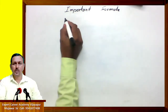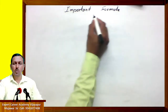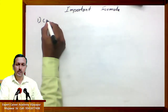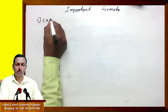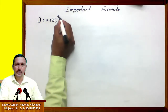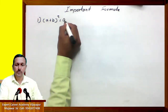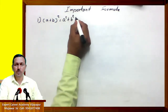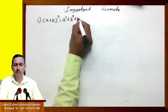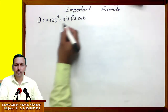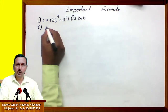Important formula. First one: (a plus b) bracket square equals a square plus b square plus 2ab. Second one,